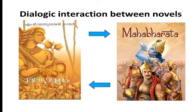Bakhtin applies this concept of dialogic interaction to the relationship between different literary works. He applies it to the social world and also to the relationship between novels. For example, when we read certain novels, we feel the ideas or situations mentioned make us reconsider the ideas we read in a previous book. M.T.'s novel Randaam Oozhham is in a continuous dialogue with the epic Mahabharata and other works written about the characters in the epic.